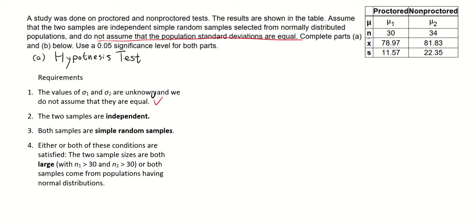Second requirement, the samples are independent. It did say here, the two samples are independent. And number three, both samples are simple random samples. It did say here, they are simple random samples. And number four, either or both of these conditions are satisfied. The two sample sizes are large, both greater than 30. One is equal to 30. The second condition is both samples are coming from populations having normal distribution. We do satisfy the second condition. They are both from normally distributed populations. So four of the requirements are satisfied. We can start the test.